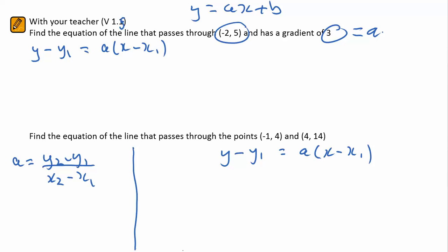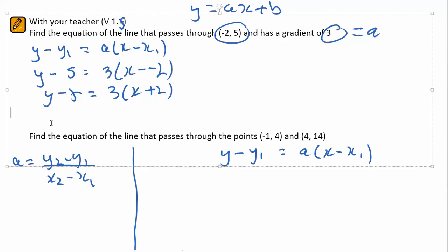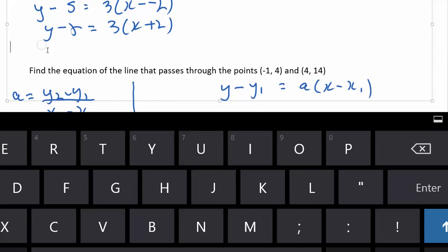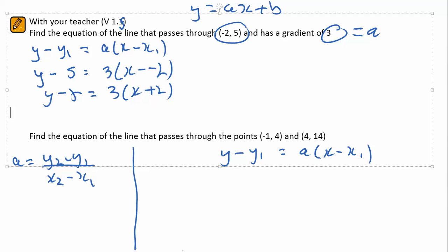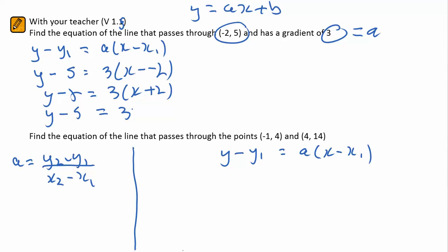So I can then substitute this in to find the equation. Transposing the negative 5 to the other side becoming a plus 5, I end up with y equals 3x plus 11.